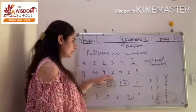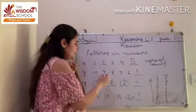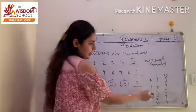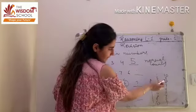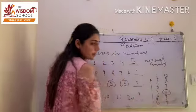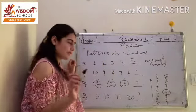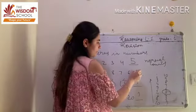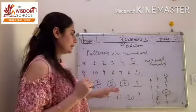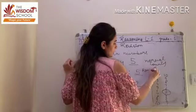Here we can see the reversed counting: 10, 9, 8, 7, 6 — and next, which number will come? 5. So 5 will come here. This is the example of reverse counting.